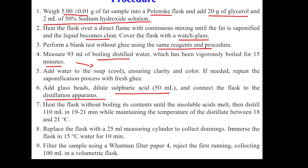Saponification is complete only when the liquid becomes clear — that is the indication. Then heat the flask without boiling its contents so that the insoluble fatty acids melt. Distill 110 ml in 19 to 21 minutes while maintaining the temperature of the distillate between 18 and 21 degrees Celsius.